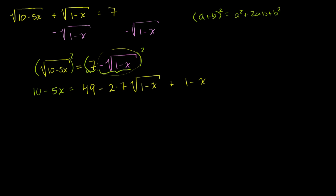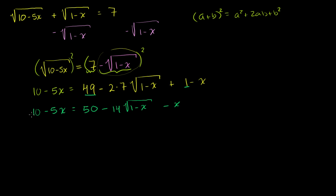So this simplifies to: 10 minus 5x equals — we add 49 and 1 to get 50 — minus 14 times the square root of 1 minus x, minus x. Then we subtract 10 from both sides and get: negative 5x equals 40 minus 14 times the square root of 1 minus x minus x.